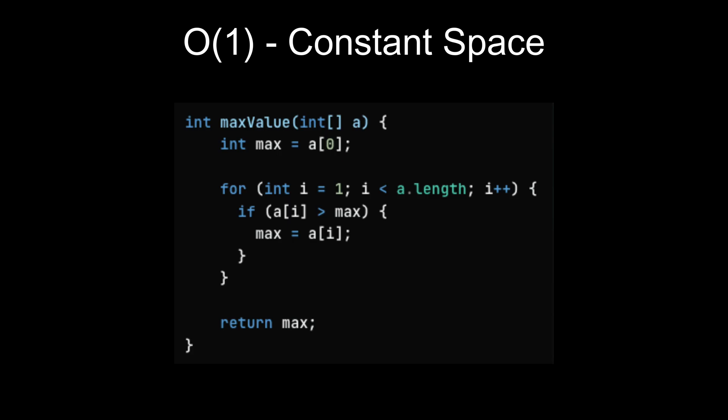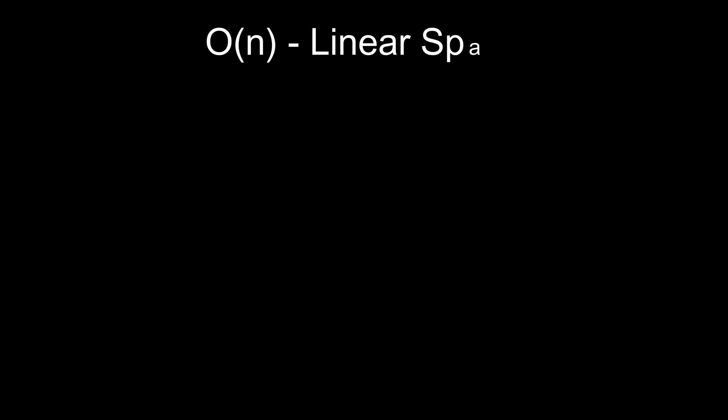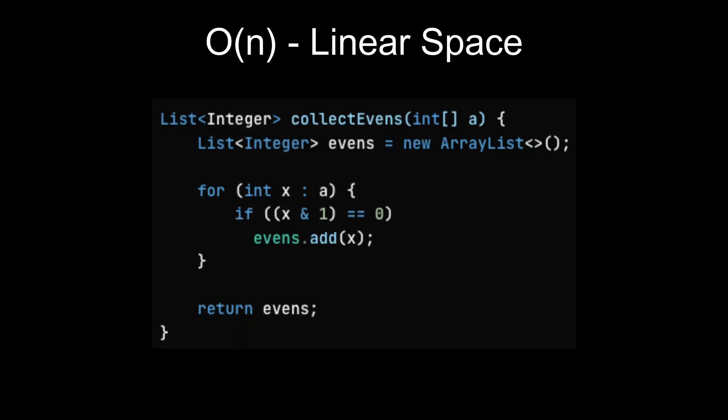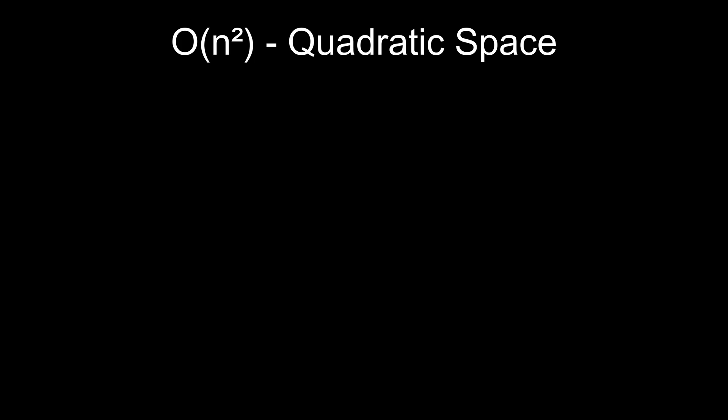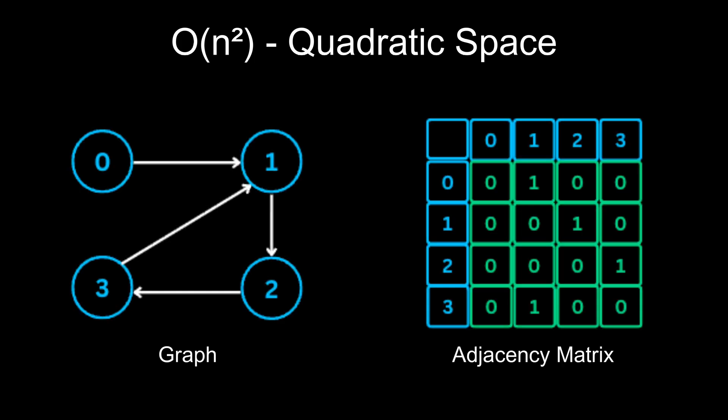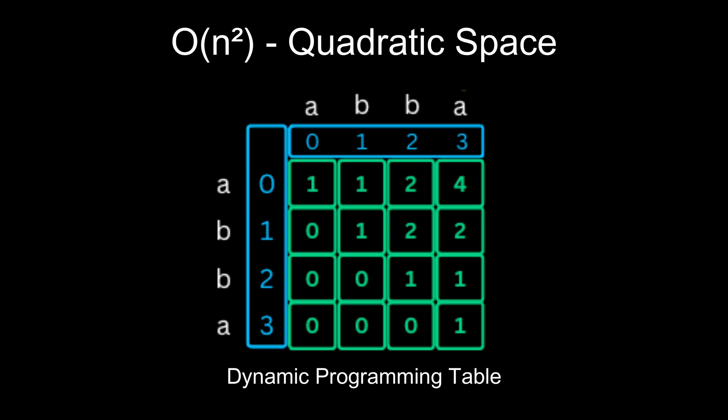Now, let's look at popular space complexities you will come across. First, constant space. If you scan an array to find the maximum value, you only store one variable to track the current max. So while the input size may grow, your extra space stays constant. Second, linear space. Now suppose you collect all even numbers from an array into a new list. If half the numbers are even, that's roughly N by two elements, which still counts as O(n). Next, quadratic space. Storing a full matrix like an adjacency matrix or a dynamic programming table of size N times N takes O(n²).